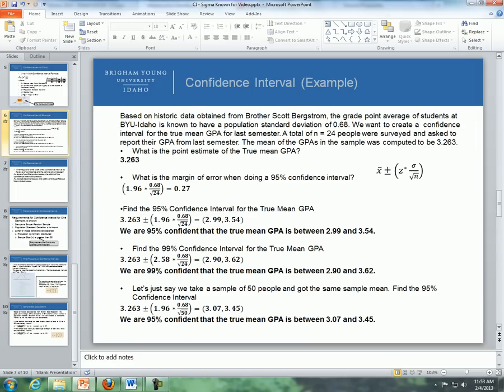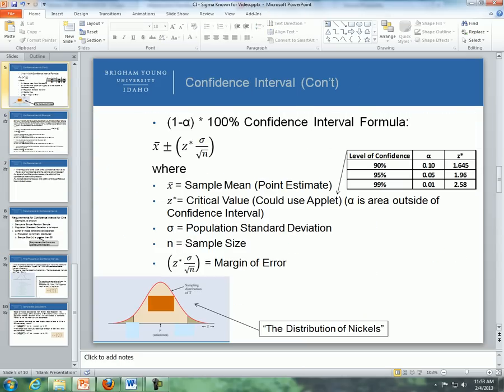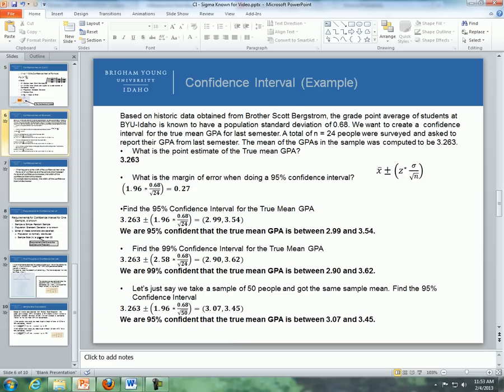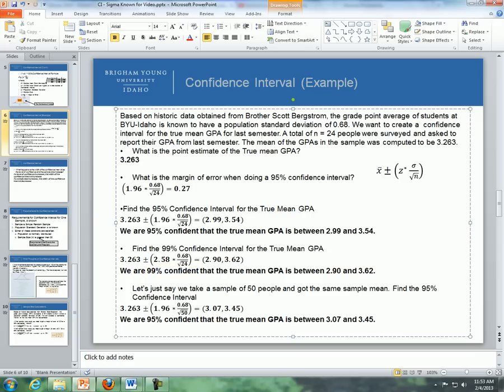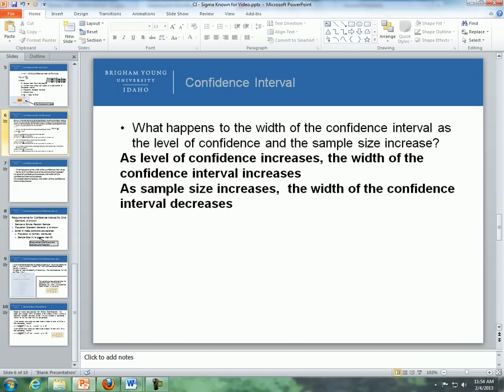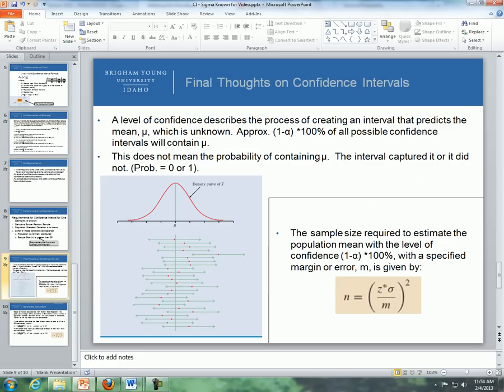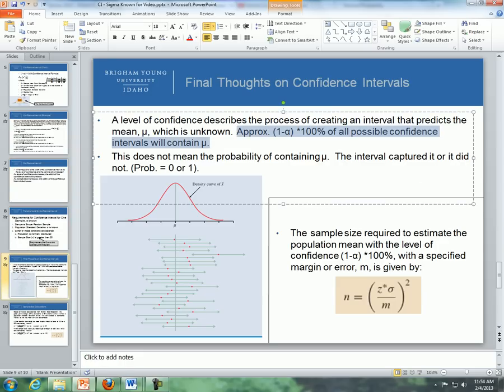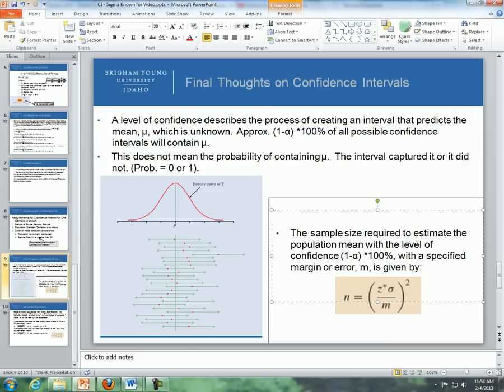The other definition is just to say that we are 95% confident or 99% confident, whichever it is, that the true mean is somewhere between two numbers. That's the basic definition of what a confidence interval is for. And the other definition is doing the process. So if we're going to do this a thousand times or a gazillion times, about 95% of all confidence intervals would contain the true mean.